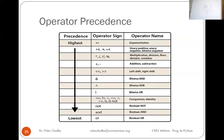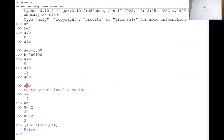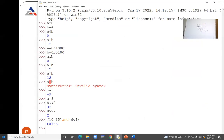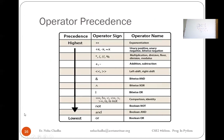In case of equality of precedence among operators, the associativity comes from left to right. There is a precedence table where you can refer to the number of operators and their precedence. When there is equality among operators, check the associativity from left to right.